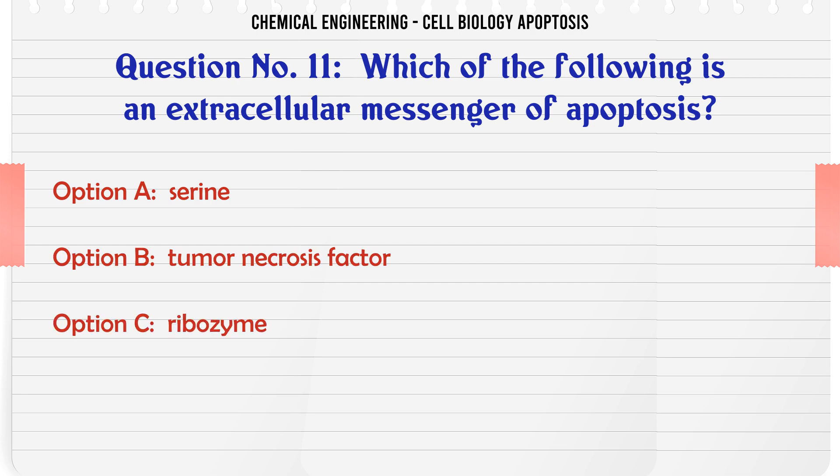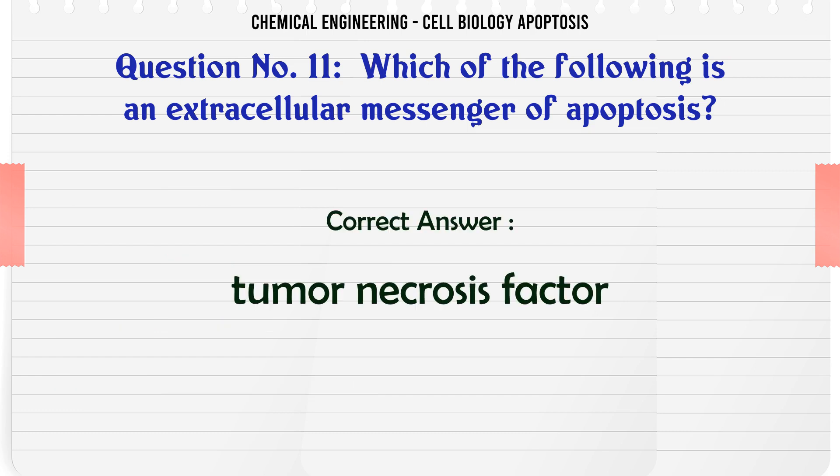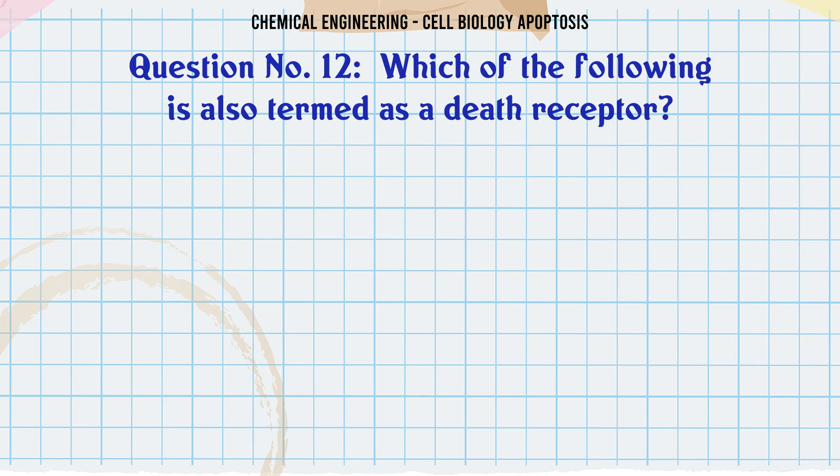Which of the following is an extracellular messenger of apoptosis? A. Serine, B. Tumor necrosis factor, C. Ribozyme, D. Translation inhibitor. The correct answer is Tumor necrosis factor.